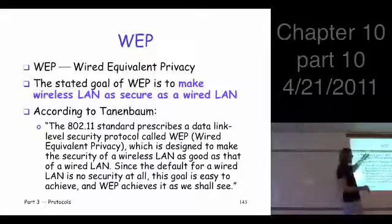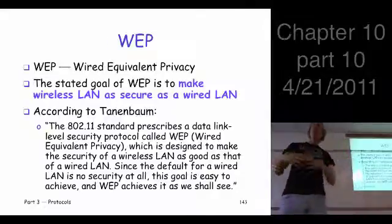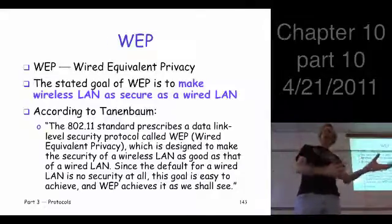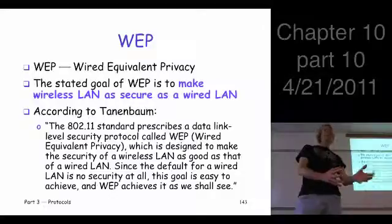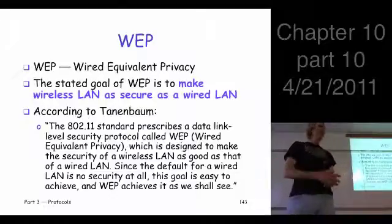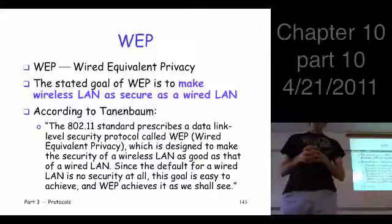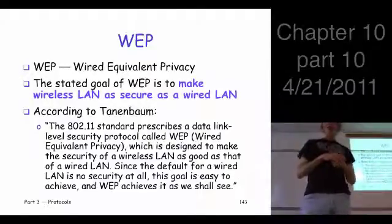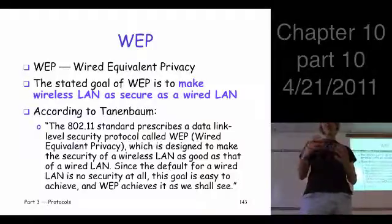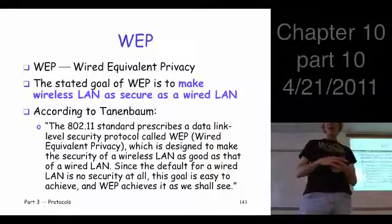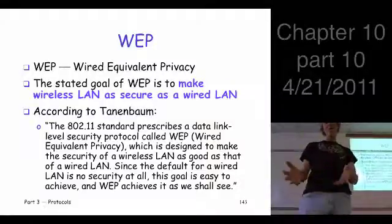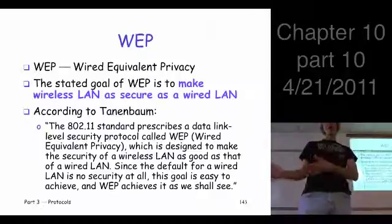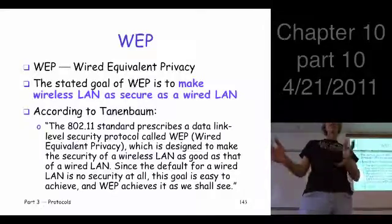Wired Equivalent Privacy — that implies you're trying to make the wireless LAN as secure as the wired LAN. Now how secure is the wired LAN? There's a great quote from Tanenbaum's book: 'The 802.11 standard prescribes a data link level security protocol called WEP, wired equivalent privacy, which is designed to make the security of a wireless LAN as good as that of a wired LAN. Since the default for a wired LAN is no security at all, the goal is easy to achieve, and WEP achieves it, as we shall see.'